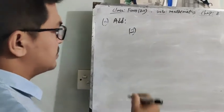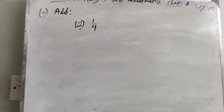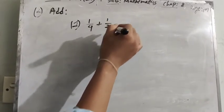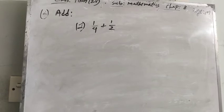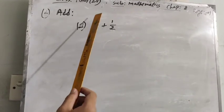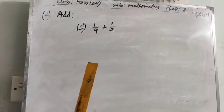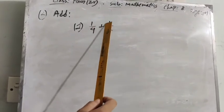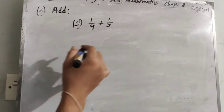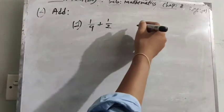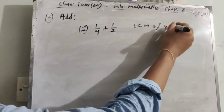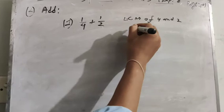The position is given here: 1/4 plus 1/2. We have to find the addition of the fractions. In the first fraction we can see 1/4 and the second fraction is 1/2. The LCM of 4 and 2 is 4.